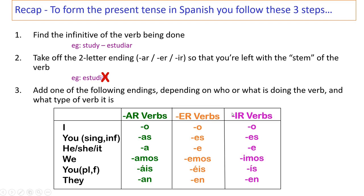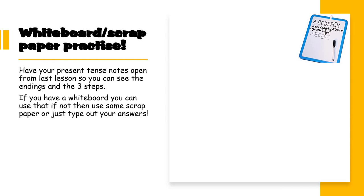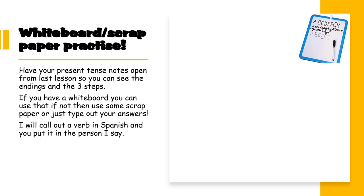And I have these endings for an IR verb as well. So just to get our minds back into doing that, we're going to do a little practice. If you have a whiteboard at home you can use it for this, or otherwise just get a scrap piece of paper or just type out the answers. You don't need to submit these to me - just have a little bit of practice. So I'll call out a verb in Spanish and it'll be on the screen as well, and the person, and you need to put it into Spanish just like we did last lesson. So if I say escribir, which means to write - pause the video and write down what 'I write' is.